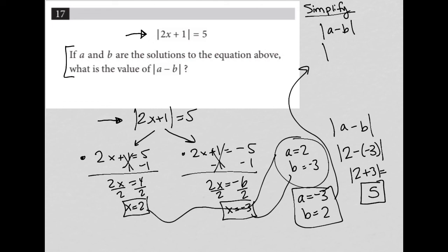now I'd have the absolute value of negative 3 minus 2. And we would see that that is the absolute value of negative 5, which is positive 5. So either way, the answer is still 5. That is the correct answer for this question.